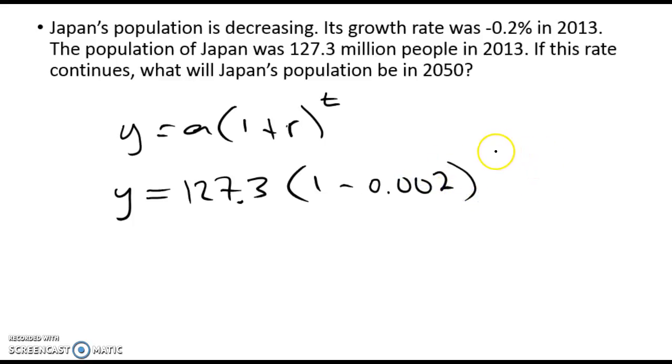So we're going 37 years from 2013 to 2050. Now that we have that figured out, we just follow the order of operations, do exponents first. Obviously you're going to be using a calculator for this step.